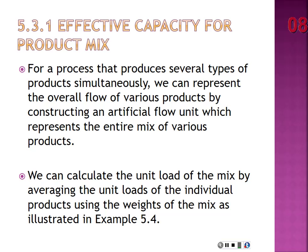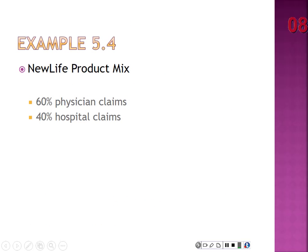A weighted average works like this: if you run two products and do one 80% of the time and another 20% of the time, and the first takes one minute and the second takes two minutes, you take 80% × 1 minute plus 20% × 2 minutes — that sum is your weighted average. That's the premise behind the artificial flow unit.